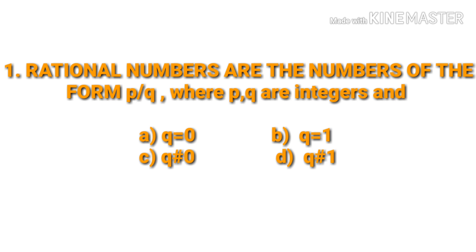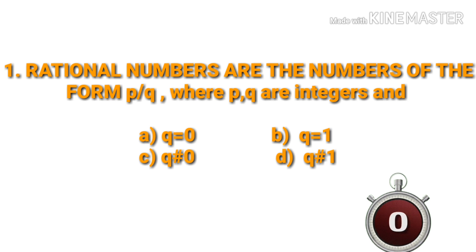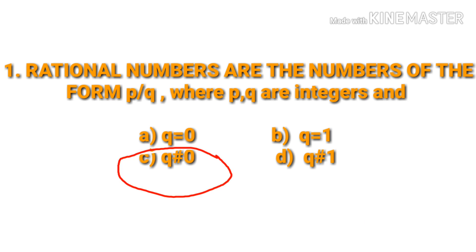Rational numbers are the numbers of the form P by Q, where Q is not equal to 0.